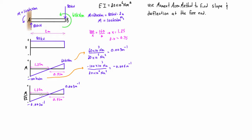Now we have to pick two points on the M over EI diagram to find the relative slope and tangential deviation between. We always want one point where we have known information about its slope or displacement in the deformed structure, and the other point is where we're looking for information. The bending moment diagram tells us the first part is concave down and the second part is concave up.